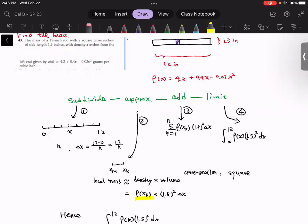The height is Δx. The area of the base, because of the square cross section, will be 1.5 squared. So this part gives us the volume. Then this is step two.